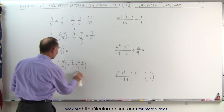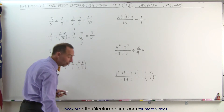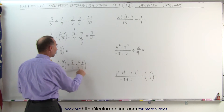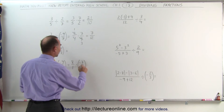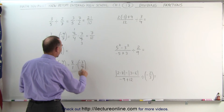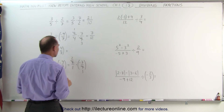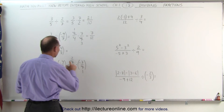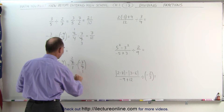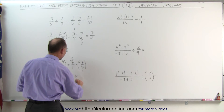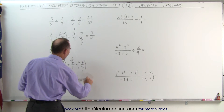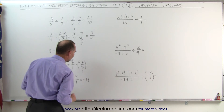Actually, I should have noticed that I can simplify before multiplying. I have an 8 and a 4 — 4 divided by 4 is 1, and 8 divided by 4 is 2. So we get 2 times negative 7, which is negative 14, over 1 times 1, which is 1. That simplifies to simply negative 14.